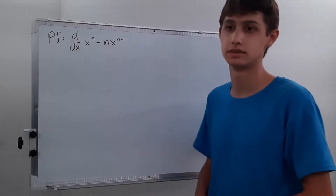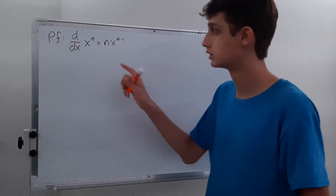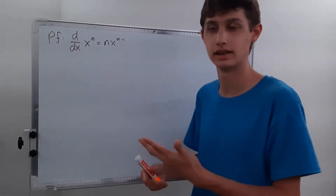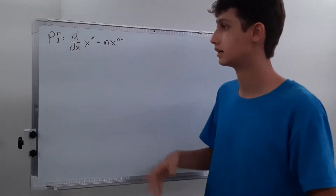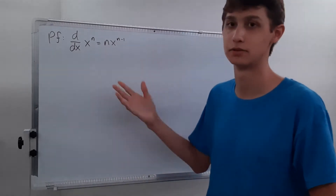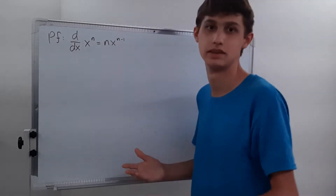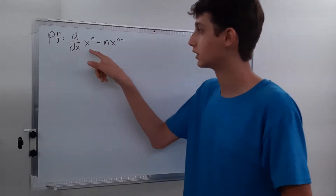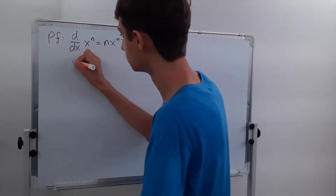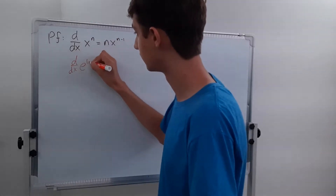So we have to rewrite this in a different way. The first thing you may notice is that you can rewrite x as e to the natural log of x — e to the ln x — because e and the natural log are inverse functions that cancel each other out. So we can rewrite x to the n as e to the ln x, and let's take the derivative of e to the ln x.